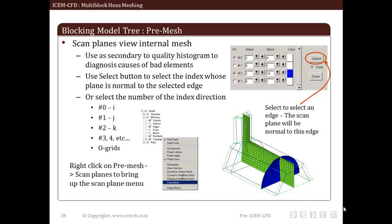There are 3 selection fields for displaying scan plane in each of principal direction i, j, k. There is a major and a minor index for each scan plane. The major index is block number in which scan plane is displayed. The minor index is the node number within block. We can play with plane position by increasing major and minor index. This is a really good tool to diagnose bad quality mesh element.